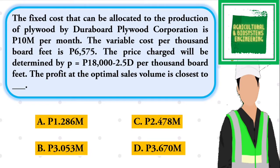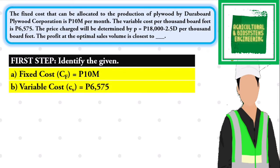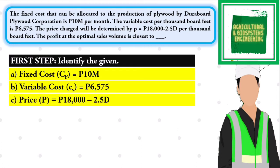To solve this problem, we first identify the given values. Fixed cost CF = 10 million pesos per month. Variable cost CV = 6,575 pesos per thousand board feet. Price = 18,000 pesos − 2.5 × D per thousand board feet. The value we need to solve is the profit.